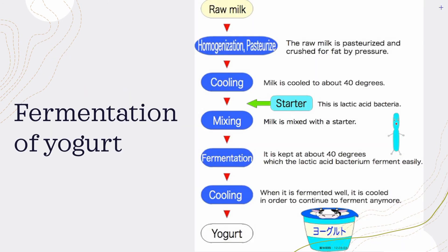Here is an example of fermentation — the fermentation of yogurt. First, raw milk is taken, then the homogenization and pasteurization process occurs. The raw milk is pasteurized and crushed for fat by pressure. After that, the milk is cooled to about 40 degrees and a starter is added.